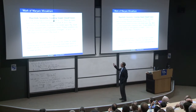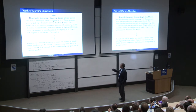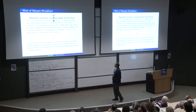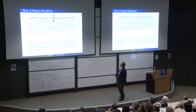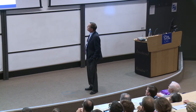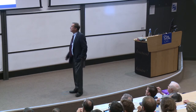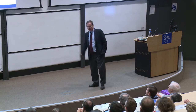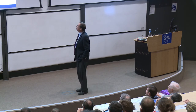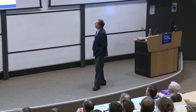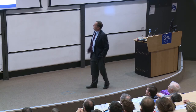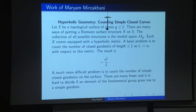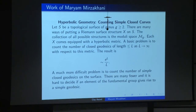A basic problem is to count the number of closed geodesics of length less than or equal to L. This grows exponentially — as e^L — and as Mirzakhani pointed out, it doesn't depend on the genus, and it doesn't depend on the particular surface X.